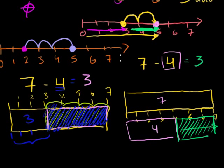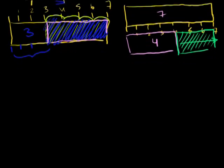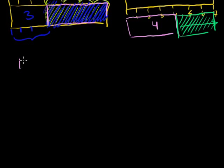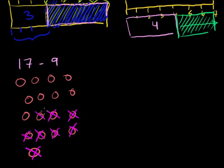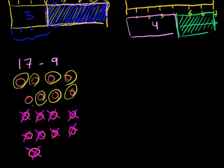Now I want to start tackling slightly larger problems. Let's do 17 minus 9. The slow way is to draw 17 objects — say, 17 chips: 1, 2, 3, 4, 5, 6, 7, 8, 9, 10, 11, 12, 13, 14, 15, 16, 17. Then take away 9: 1, 2, 3, 4, 5, 6, 7, 8, 9. How many are left? I'm left with 1, 2, 3, 4, 5, 6, 7, 8. So 17 minus 9 equals 8.